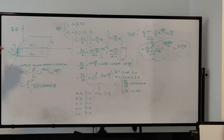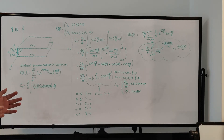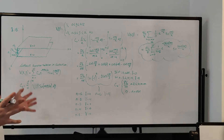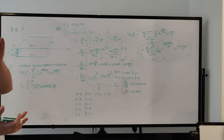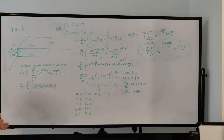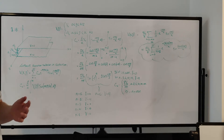Hello everyone, welcome to problem 3.13 of David Griffiths Electrodynamics. We are going to be starting the section on separation of variables. I've currently skipped over the boundary conditions and uniqueness theorem section, which has about two problems, and then there's the method of images section that has maybe like six problems or so in it, but I'm currently going to be skipping over that section for now. If you really do want me to cover it at a later point, just request it in the comments below.